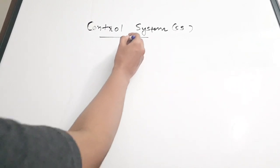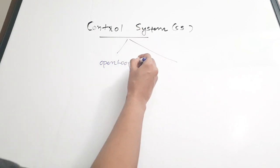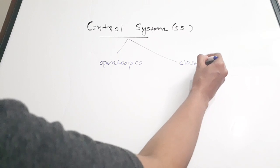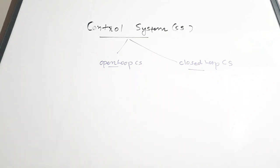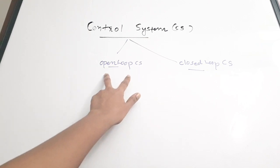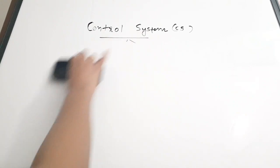There are mainly two types of control systems: open loop and closed loop control system. This is the broad classification. Open loop and closed loop control systems differ mainly in having feedback or not. An open loop control system has no feedback, whereas a closed loop control system has feedback.